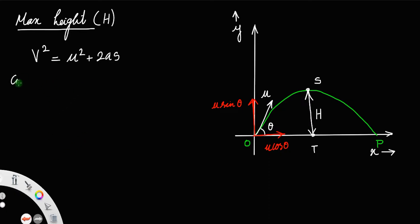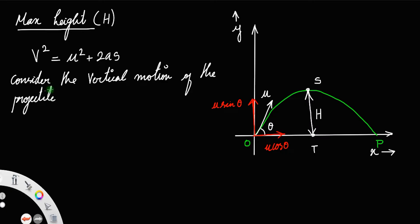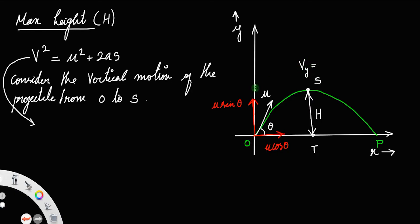Let us consider the vertical motion of the projectile from point O to point S. We have to change all the values correspondingly. Remember, O is our initial point and S is the final point, and we only consider the vertical components. The acceleration a_y means acceleration along the y-direction, which is always gravity.